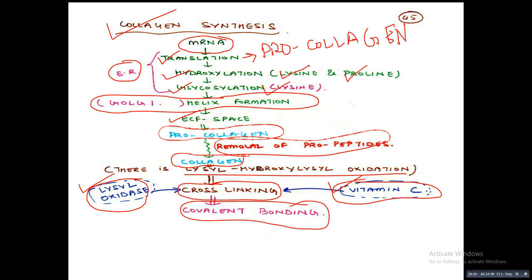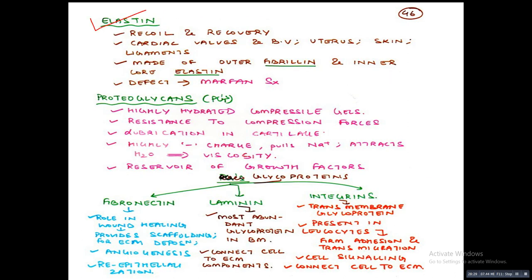Elastin is mainly responsible for recoil and recovery. It is present in cardiac valves, blood vessels, uterus, skin, and ligaments. It is made up of outer fibrillin and inner elastin. Any defect in collagen leads to osteogenesis imperfecta and Ehlers-Danlos syndrome, whereas defects in elastin leads to Marfan syndrome.